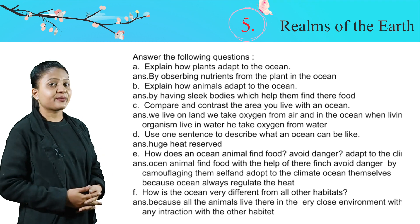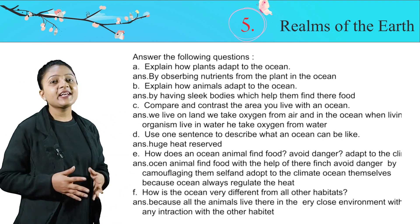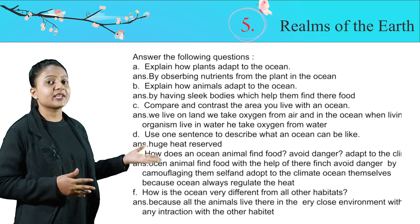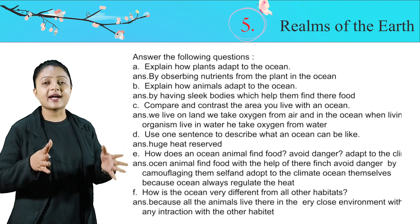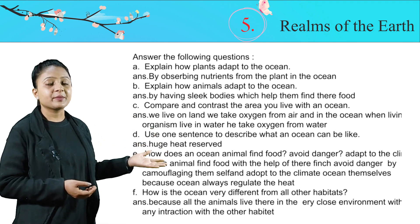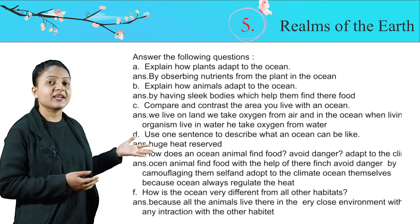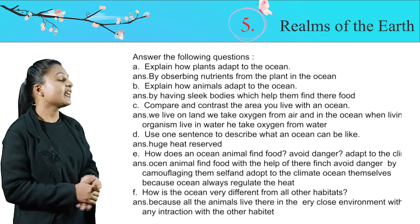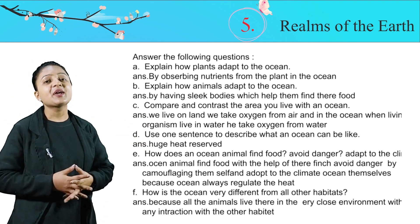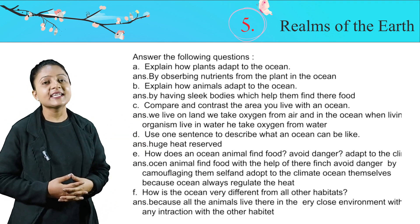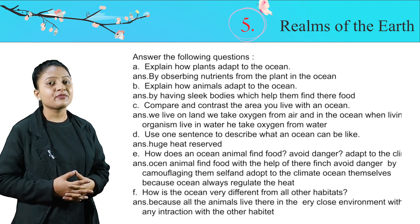Answer the following questions. A. Explain how plants adapt to the ocean. Plants adapt to the ocean by absorbing nutrients from the water. B. Explain how animals adapt to the ocean. Animals adapt to the ocean by having a slim body which helps them find their food.